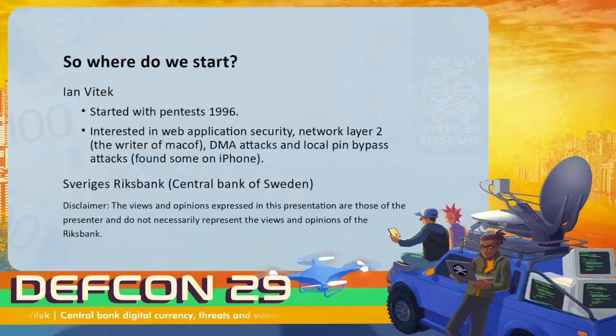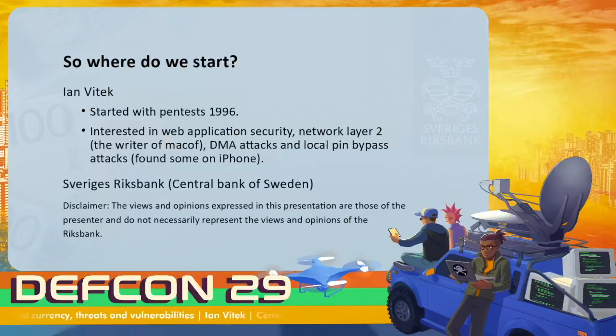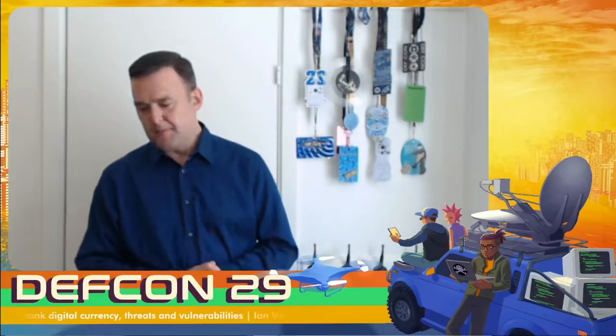My name is Jan Witek. I'm born in Stockholm, Sweden, and started doing penetration tests in 1996. I moved from being a consultant to work at a big retail banking company in Sweden, and started with a computer emergency response team. After a couple of years, I moved into information security. I've been working at the Riksbank for eight years, but the last two with central bank digital currency.